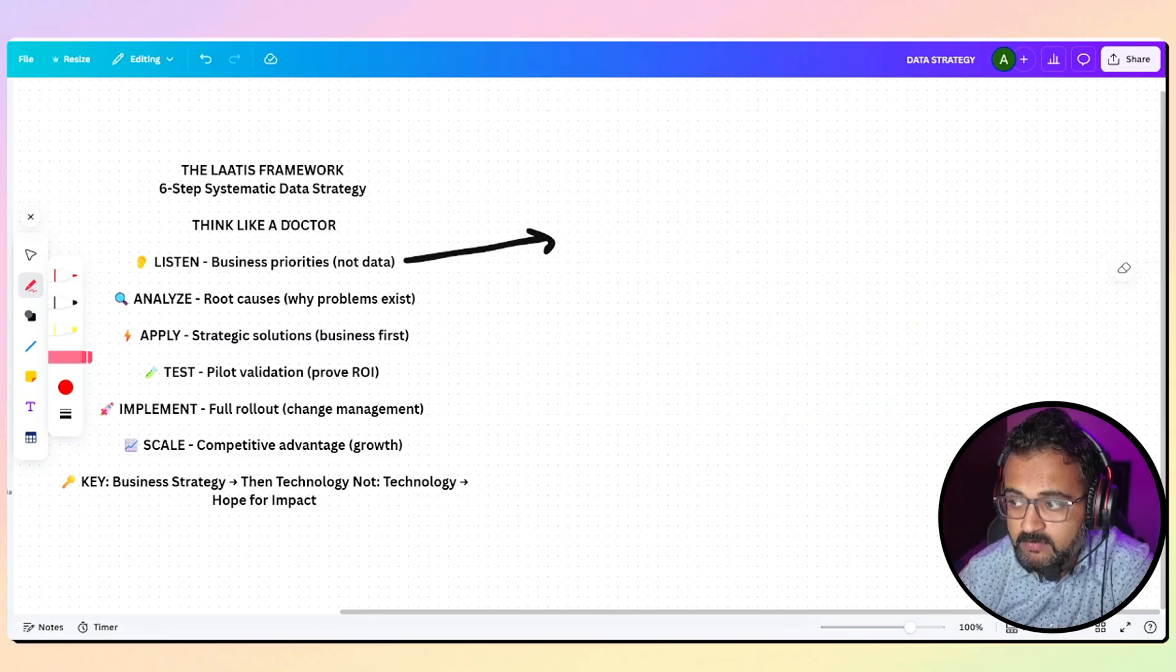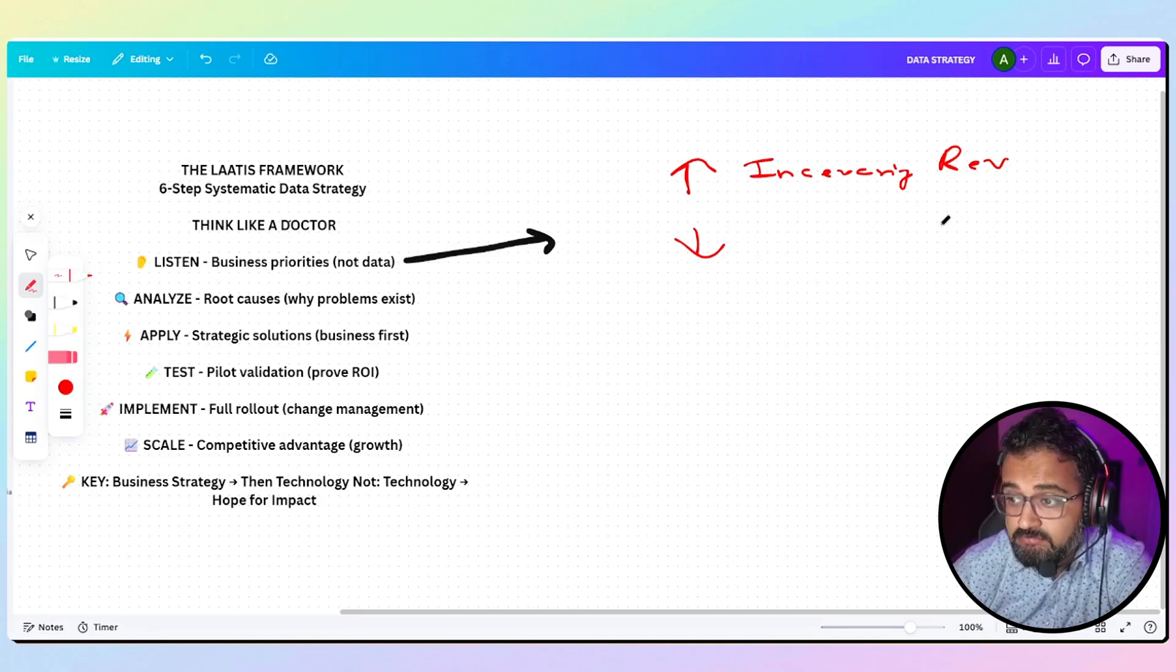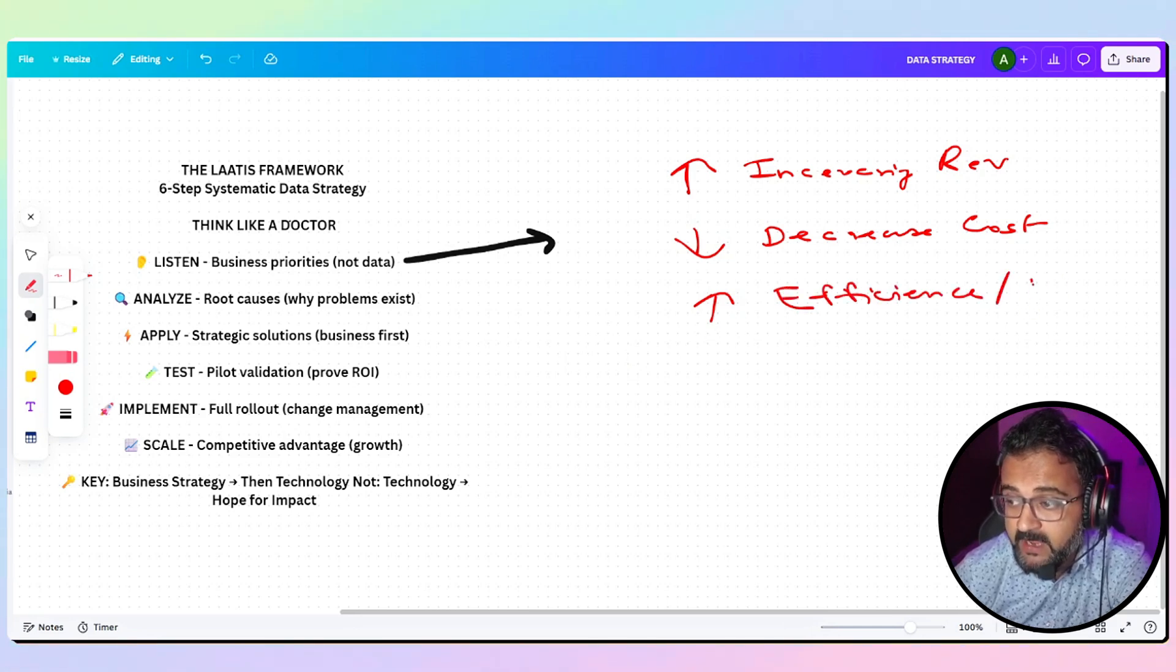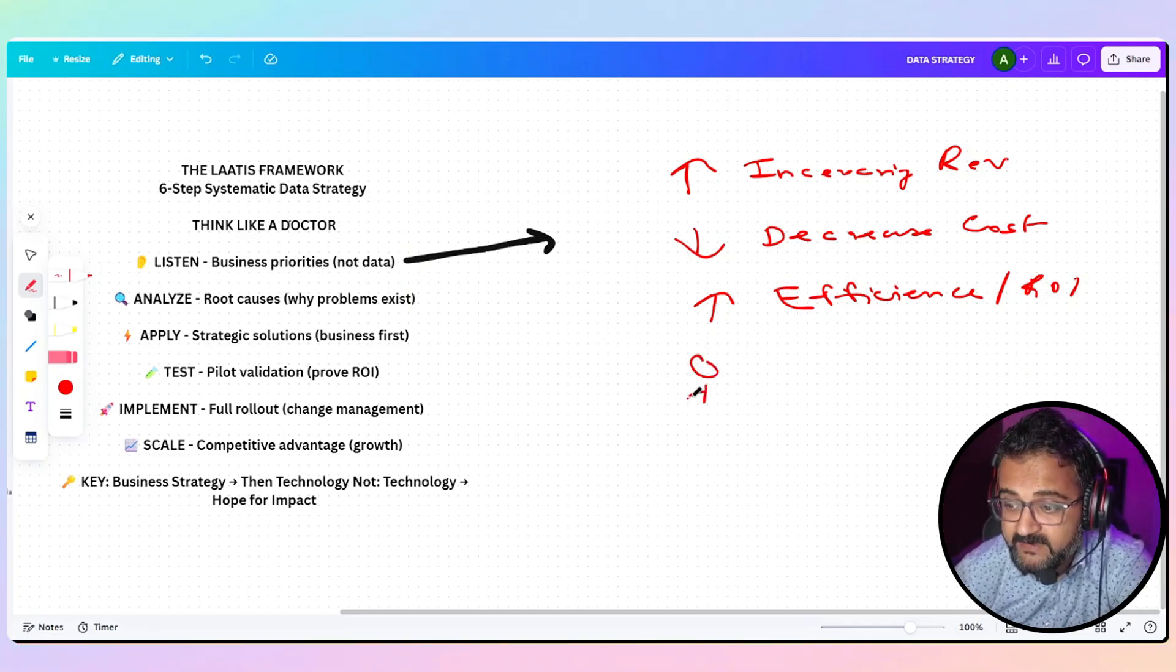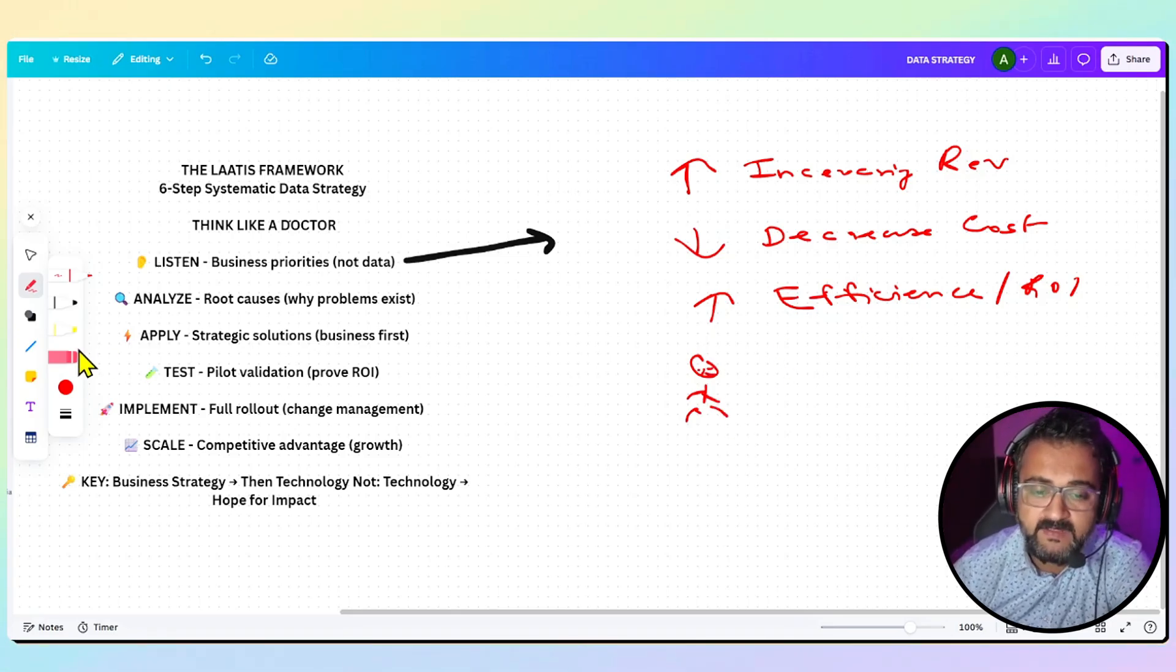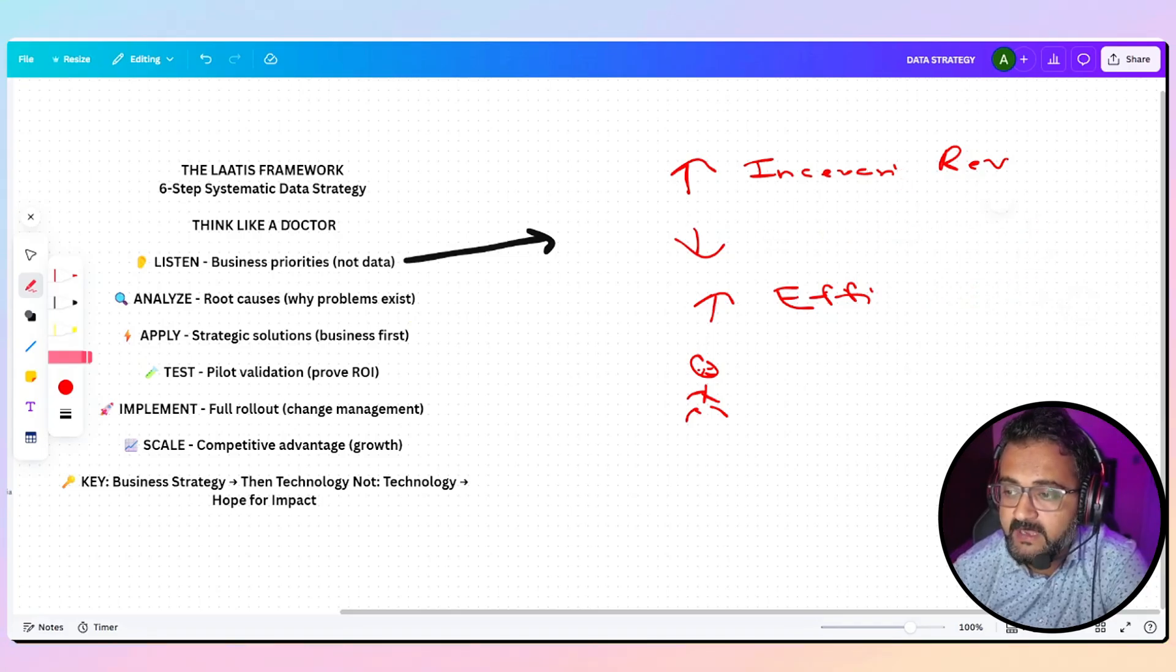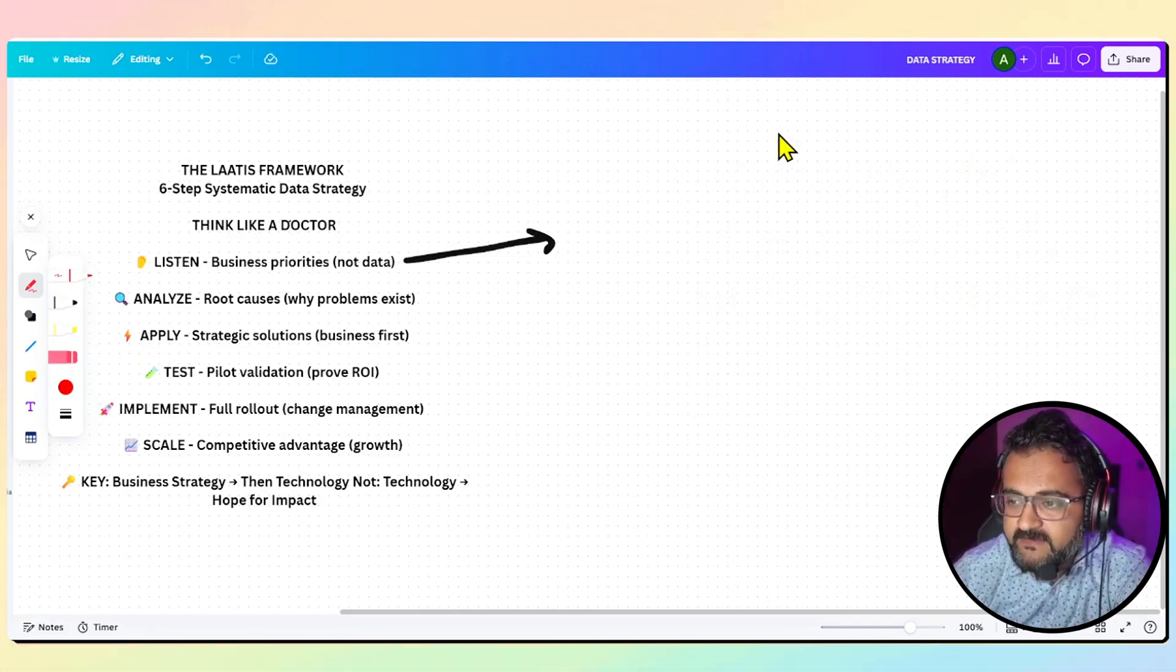Generally what happens is that whenever business calls you for anything to solve a data problem, they are not expecting a technical debate or discussion. They are basically focusing on either increasing revenue, or they might be worried about their cost so they want to decrease cost, or maybe increase their efficiency or ROI. You have to first of all listen, and you don't have to listen to one person—you have to talk to different stakeholders.